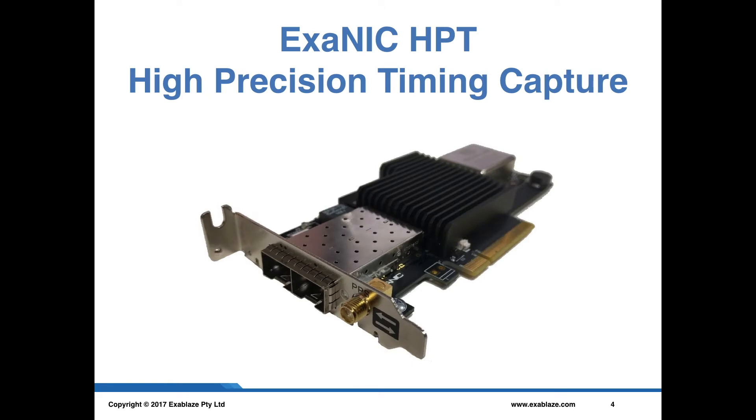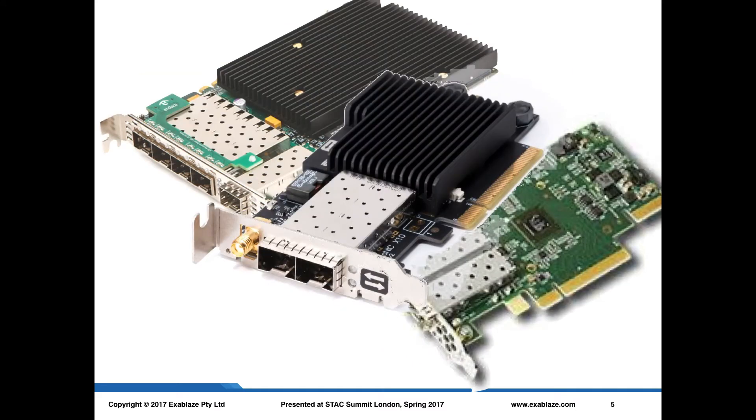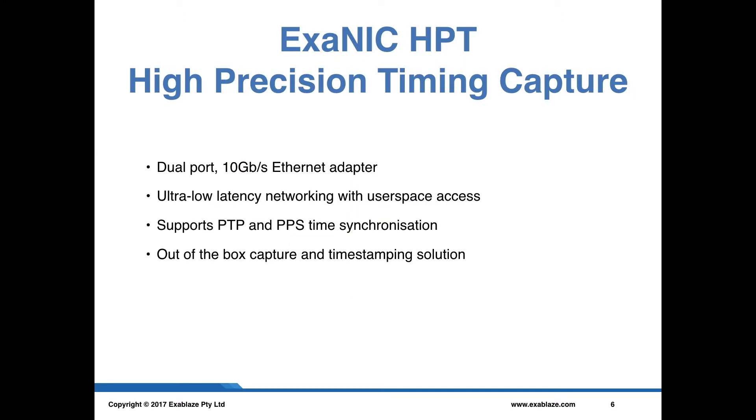The ExaNIC HPT is very much like other network capture devices that you can get on the market. It's a dual-port 10 gigabits per second Ethernet adapter. It has ultra-low latency networking with user space access. It supports PTP and PPS for time synchronization, and it's an out-of-the-box capture and timestamping solution that doesn't require any extra licenses or fees in order to use it.